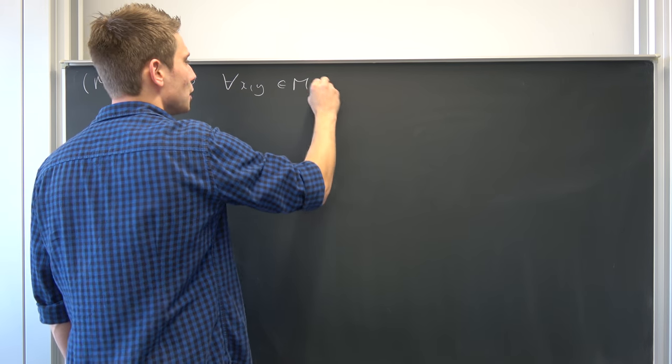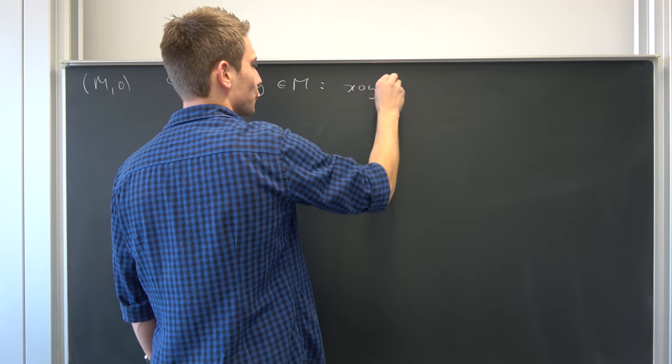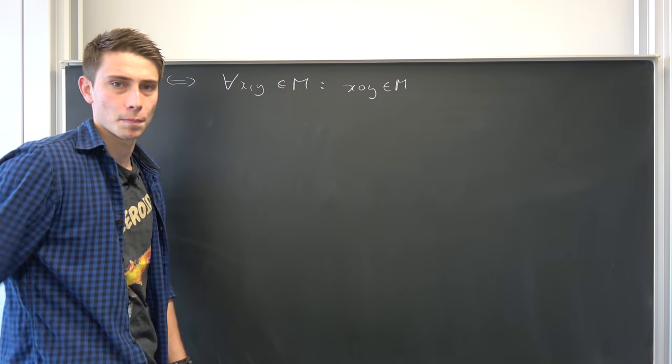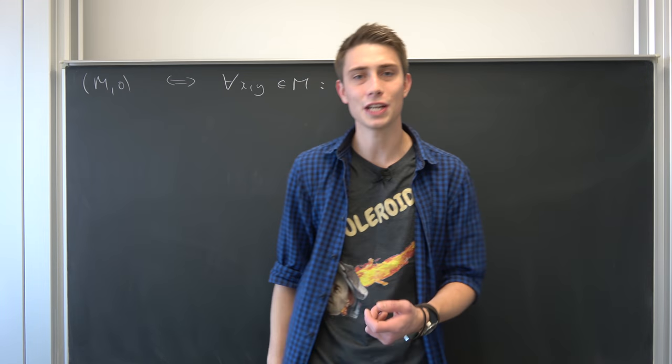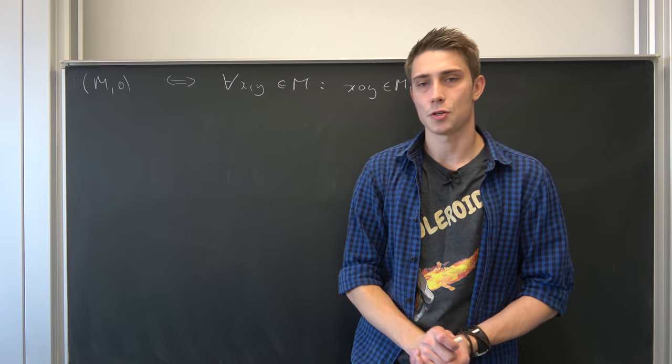elements x, y out of this M, we have that x in composition with y is once again element of M. That's what you call closure under this operation. Watch my previous video on this topic.